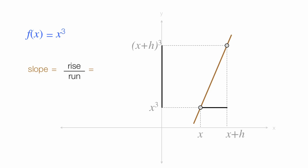Let me put these lines back there. So the rise is x plus h cubed minus x cubed. And the run is x plus h minus x. In a moment, I'm going to show you that the denominator is h, but I'm going to leave it like this for now.